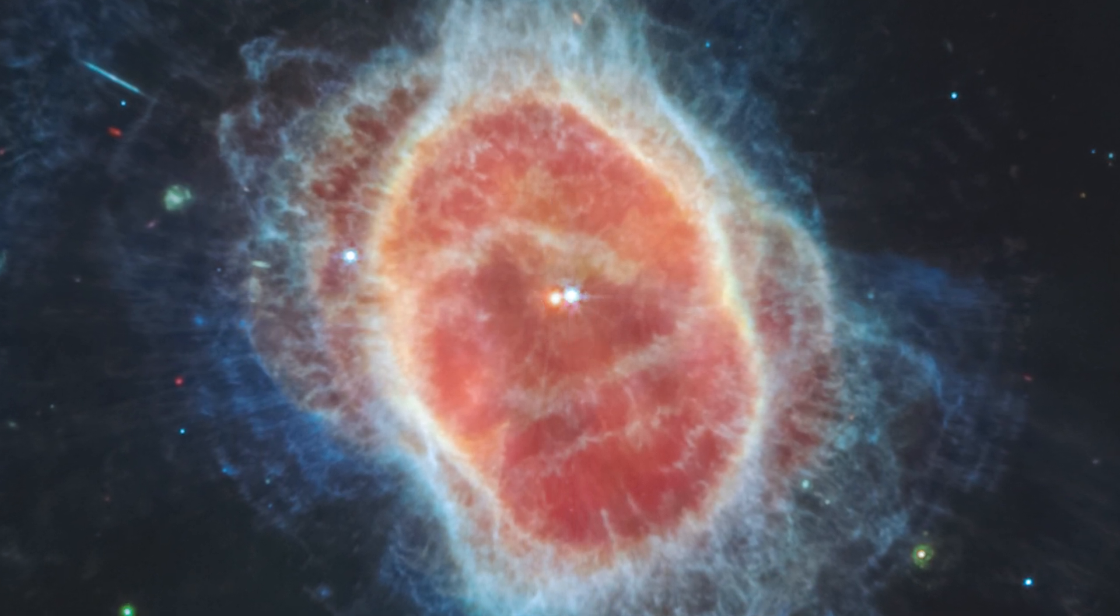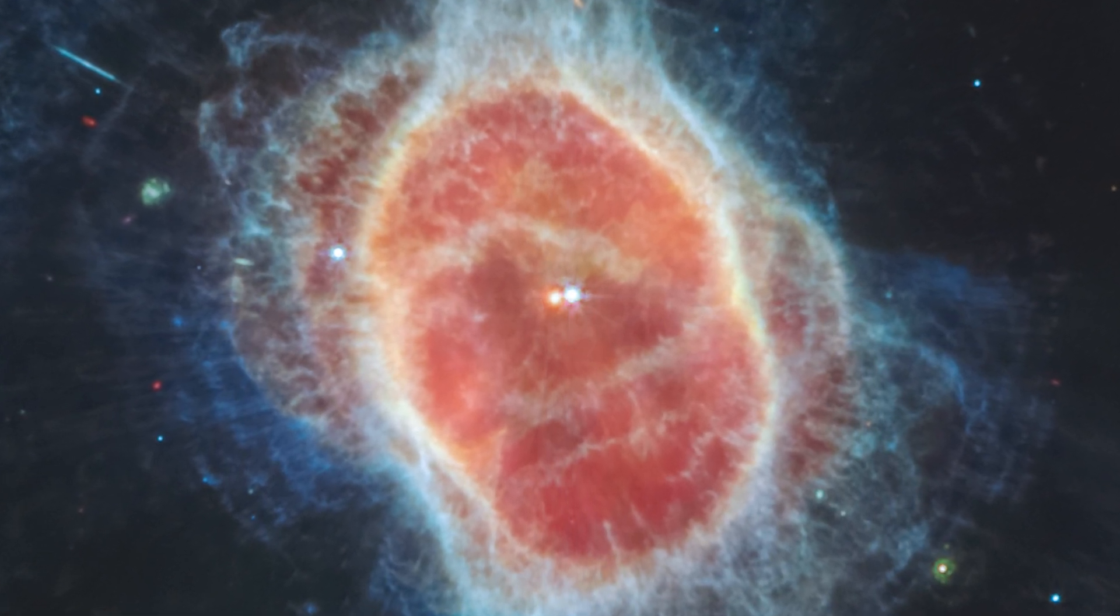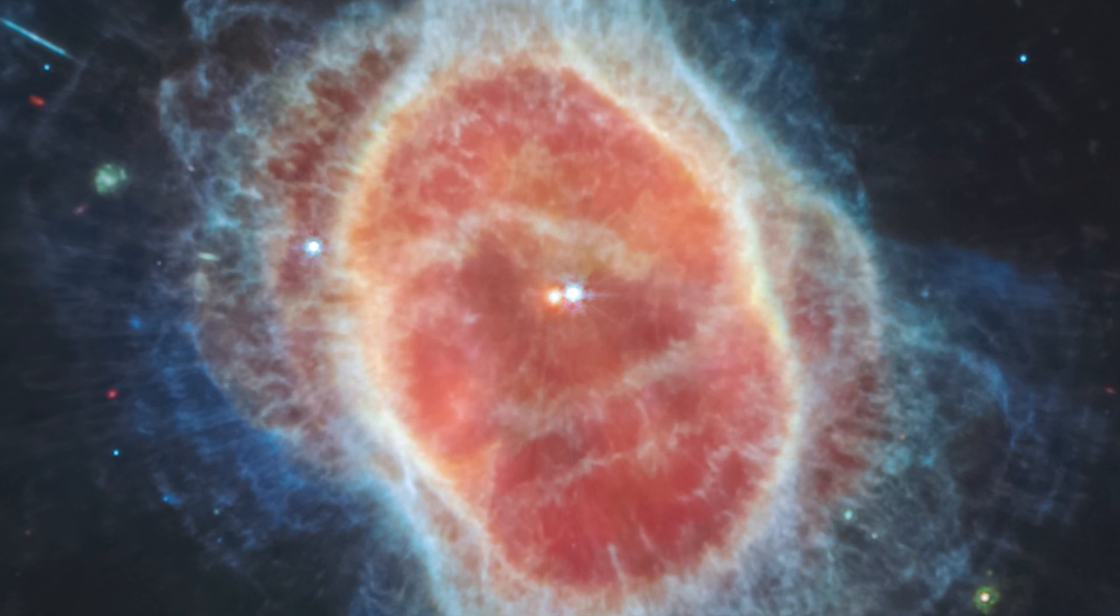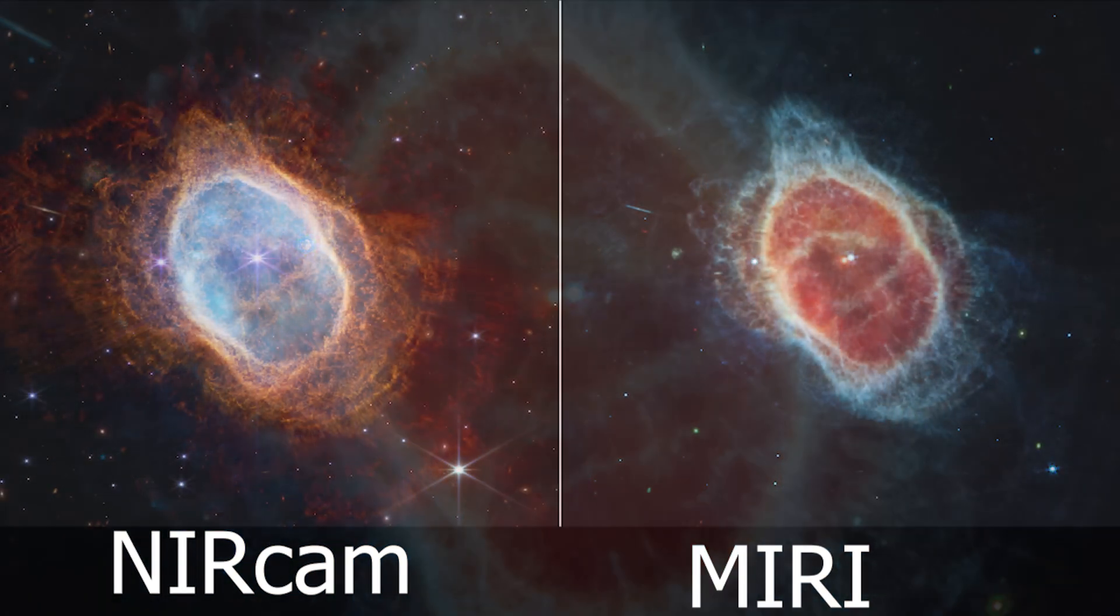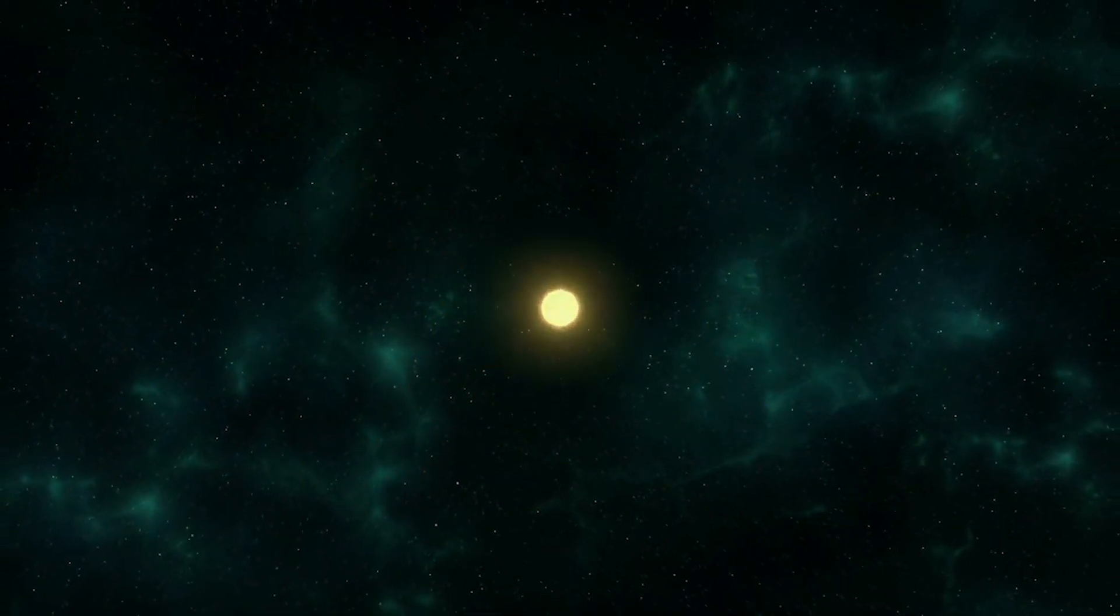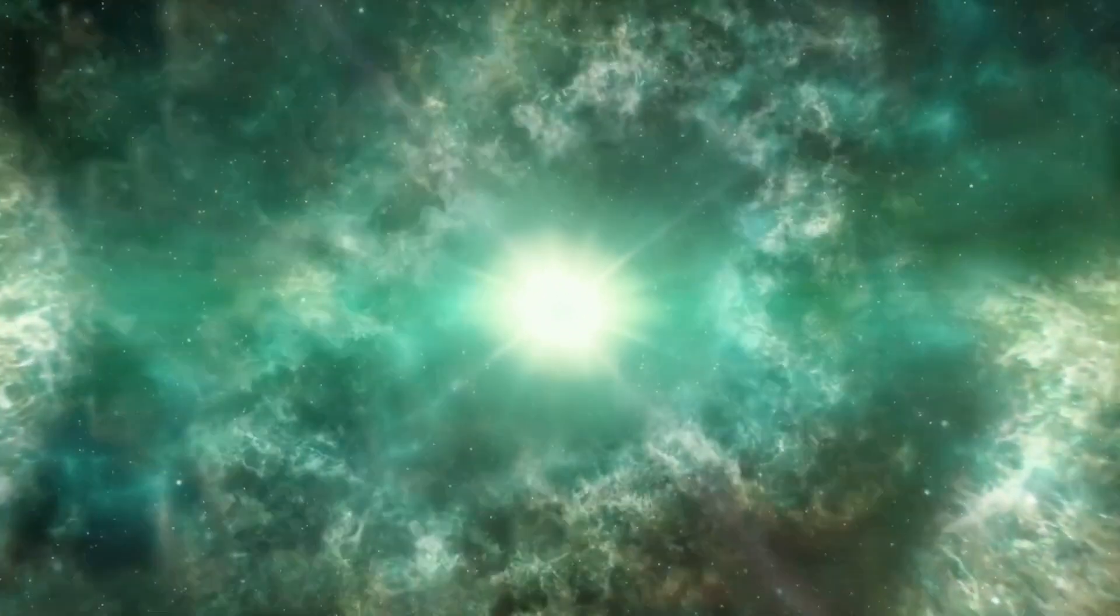The next Webb image is of a planetary nebula, a dying star about 2,500 light-years away, known as the Southern Ring Nebula. NASA released two images of this nebula, one captured by the Near Infrared Camera or NIRCam and the other by the Mid Infrared Camera or MIRI. A planetary nebula forms when a sun-like star ejects its outer layers at the end of its life.